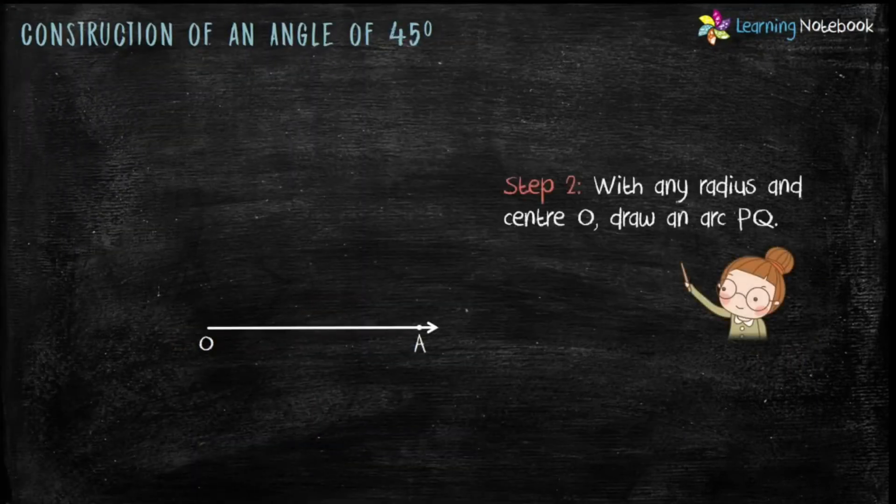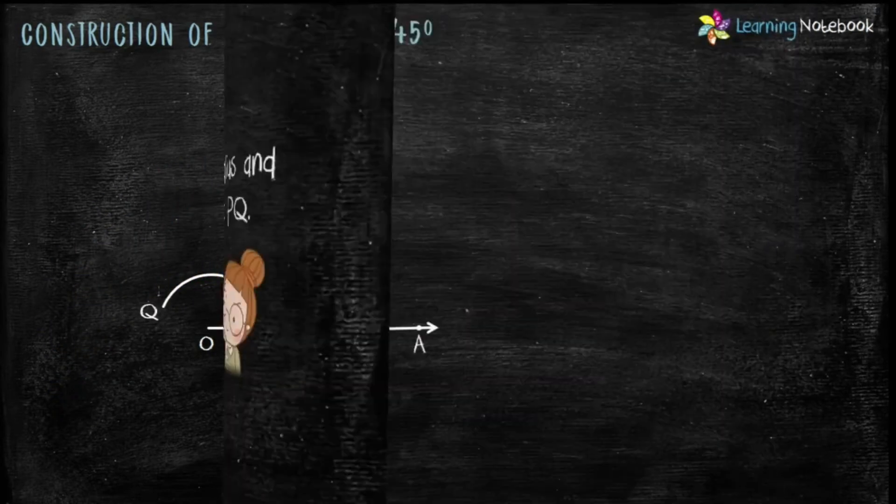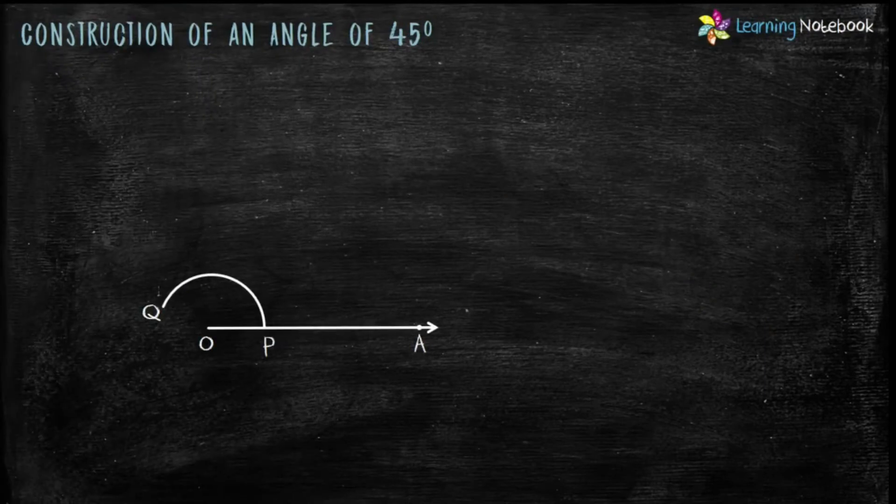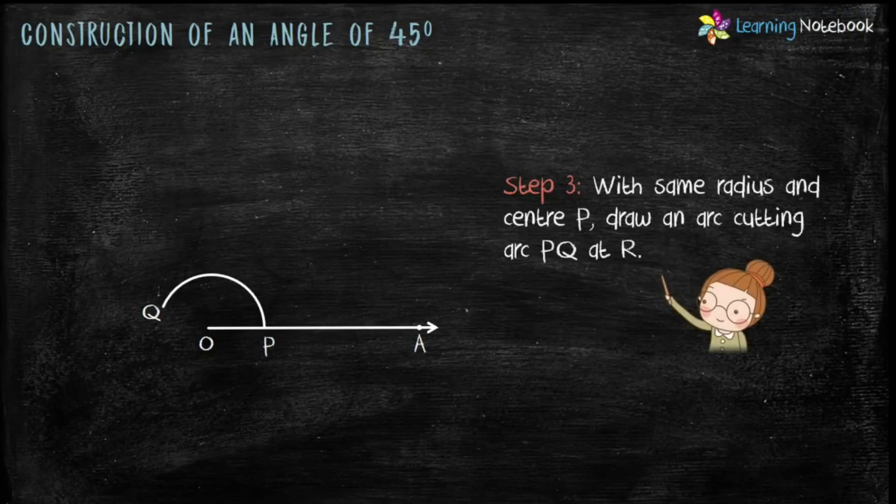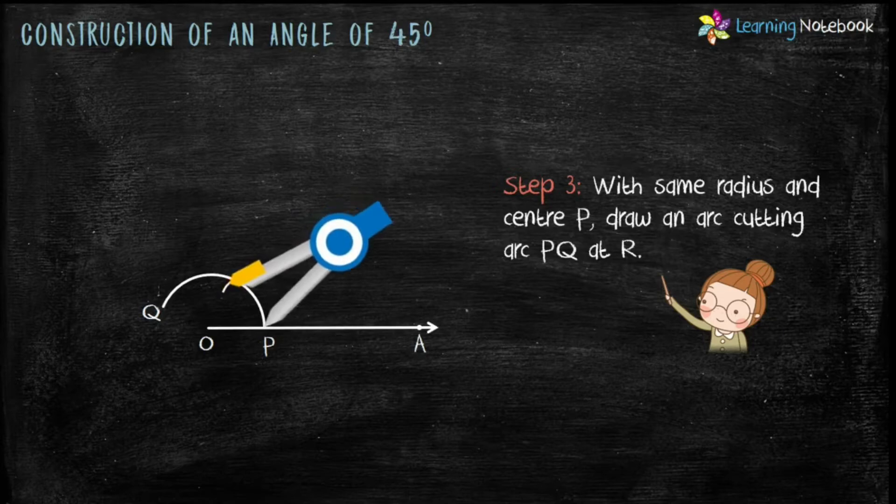Step 2 is, with any radius and center O, draw an arc PQ. In step 3, keep the radius same and center P, draw an arc, cutting arc PQ at point R.